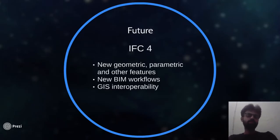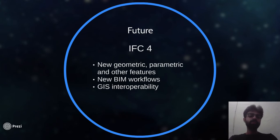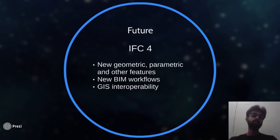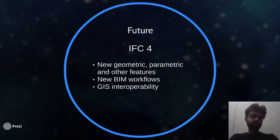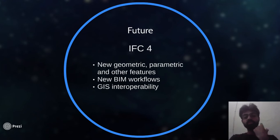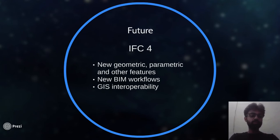Looking to the future — and it is apparently ongoing — IFC 4 includes new geometric, parametric, and other features, many exciting new BIM workflows, and GIS interoperability. But what we are waiting for now is implementation. The leading BIM software are failing for this purpose; they should do it in the future — it is very necessary. The exchange of information and interoperability is a very basic and essential thing. Open source software should also come into the picture here; they can do pretty well.